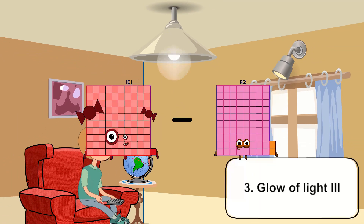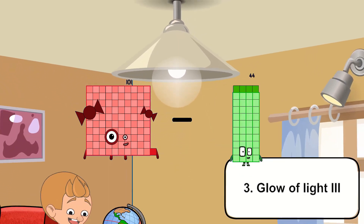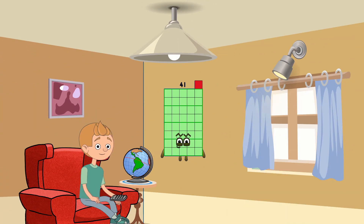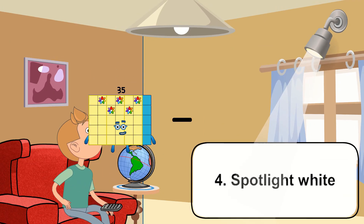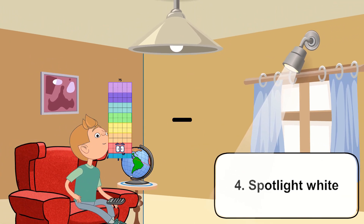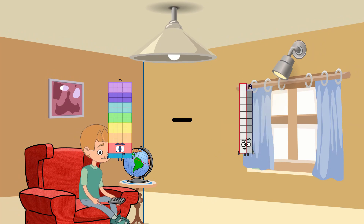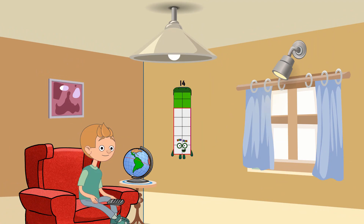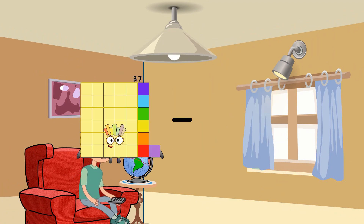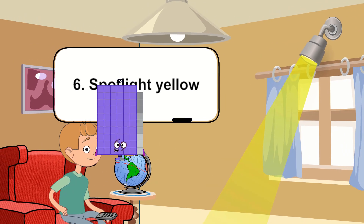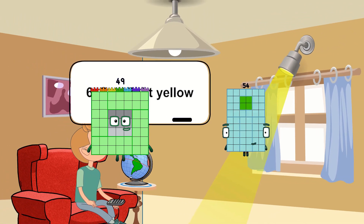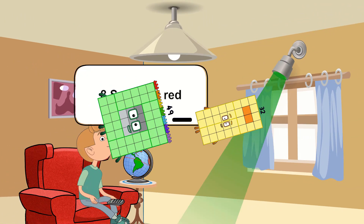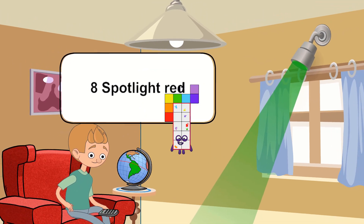101 minus 60 equals 41. 75 minus 61 equals 14. 49 minus 32 equals 17.